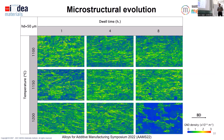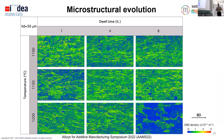Looking at the microstructural evolution for the 50 micron samples, which have the strong starting texture with columnar grains, we see that it does not change much at 1100°C. At 1150°C, we start seeing after eight hours some blue regions, which correspond to low GND densities — an indication of a certain amount of recrystallization. It is not until eight hours at 1200°C that we see large fractions of these blue recrystallized grains.